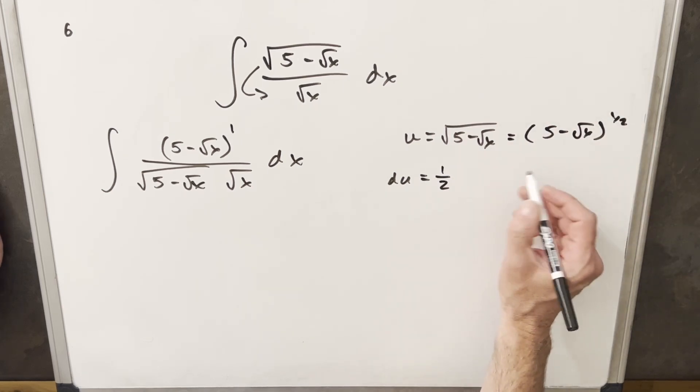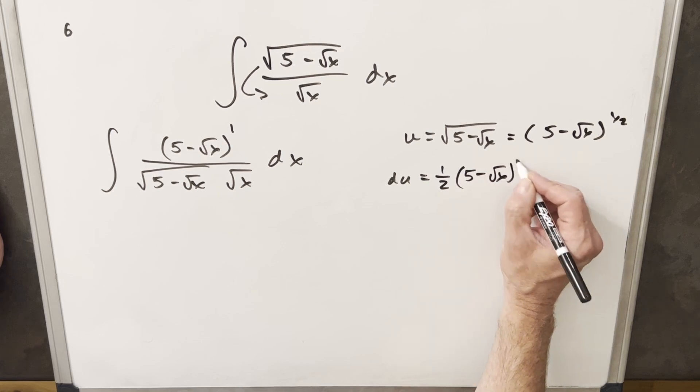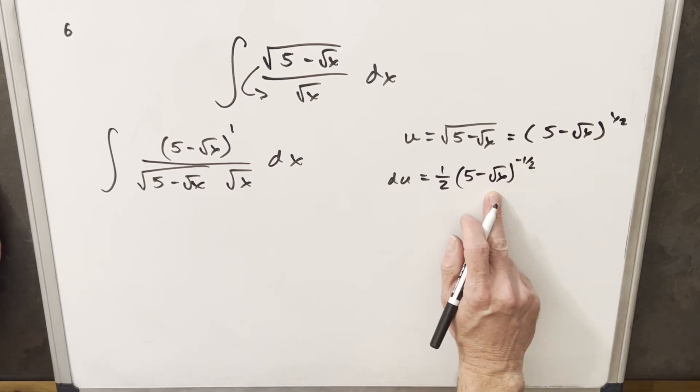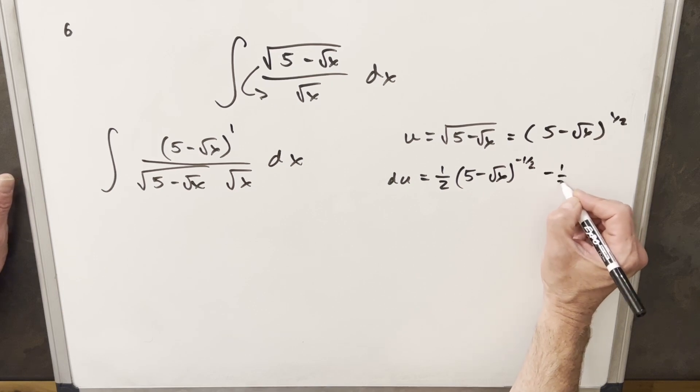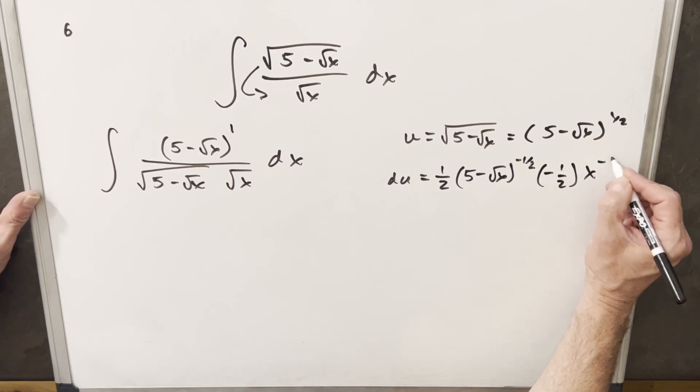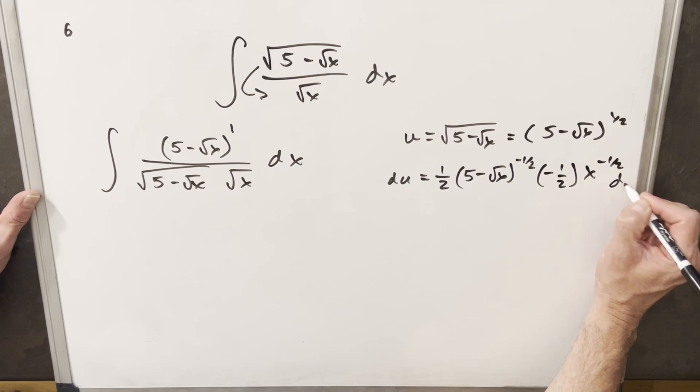And we'll get half, five minus square root of x, minus a half. Then in the chain rule, we need the derivative of what's inside here. And this is going to give us minus a half x to the minus one half dx.